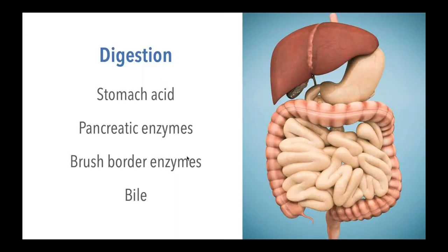The other component we want to focus on that's interactive in this model is digestion and GI physiology. When we talk about digestion, we're referring to the level of stomach acid, pancreatic enzymes, brush border enzymes in the small intestine — all of which are really important for determining the quality and extent of digestion — and also bile. Bile acids are secreted to help with digestion and absorption of fats. All these components have an influence on the microbiome and vice versa.